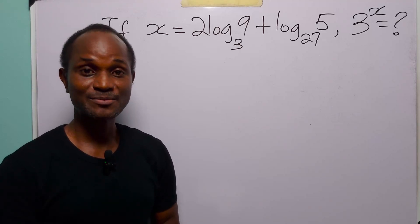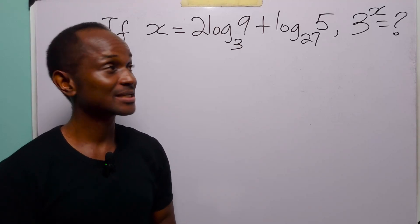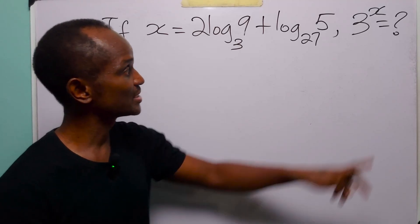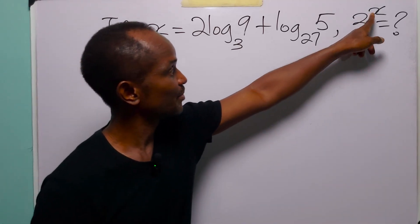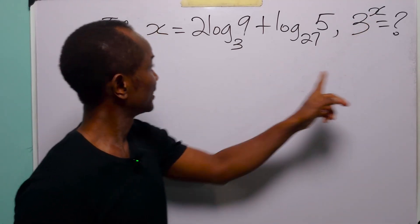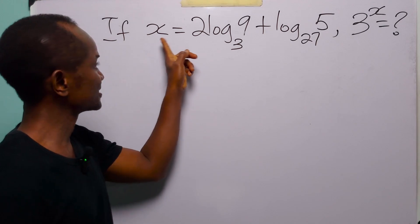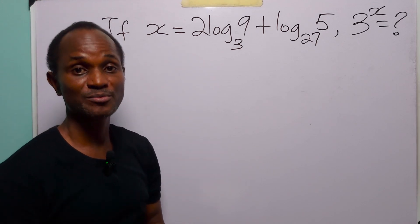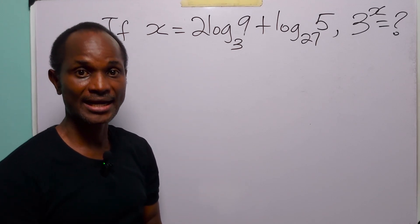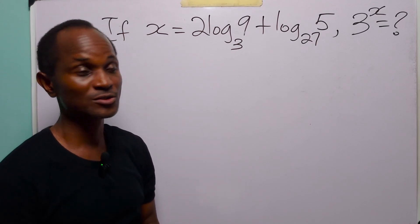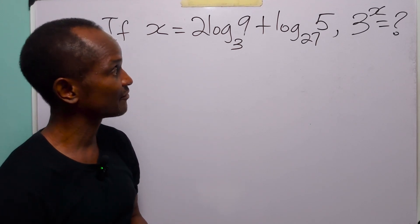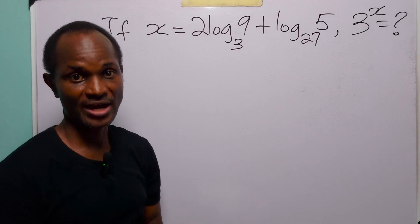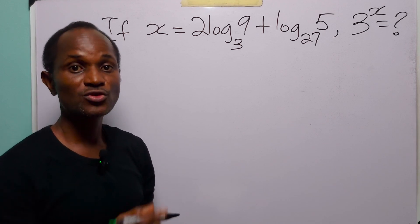Hello and welcome. In this math tutorial, our task is to evaluate 3 to the power x, given that x is equal to 2 times log to base 3 of 9, plus log to base 27 of 5.